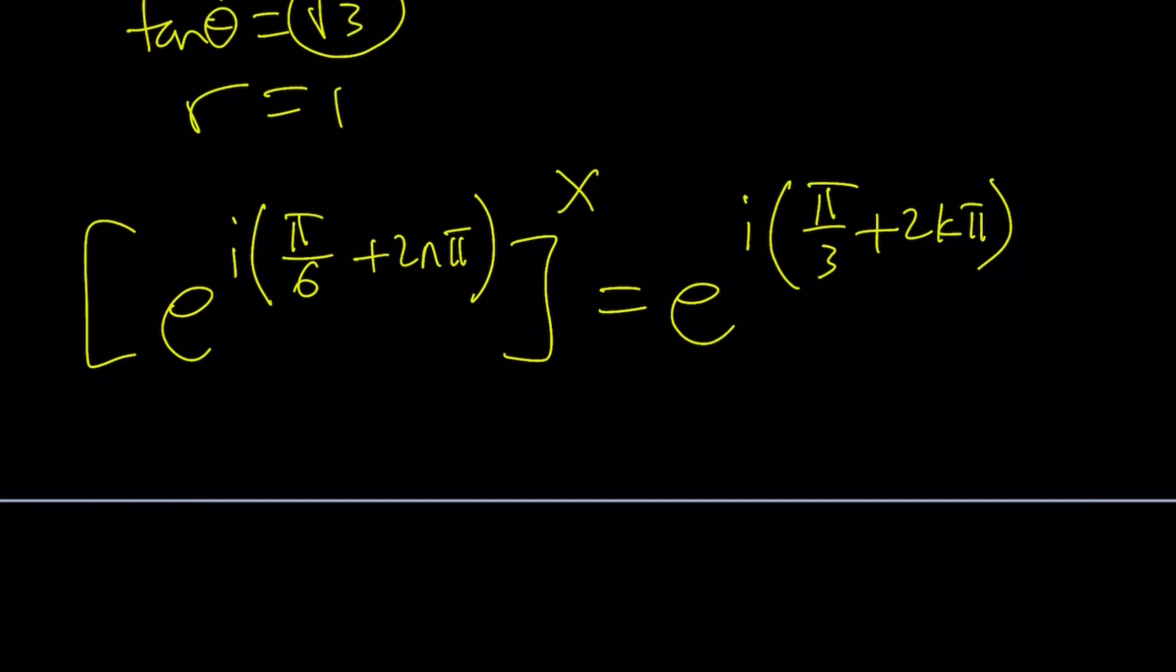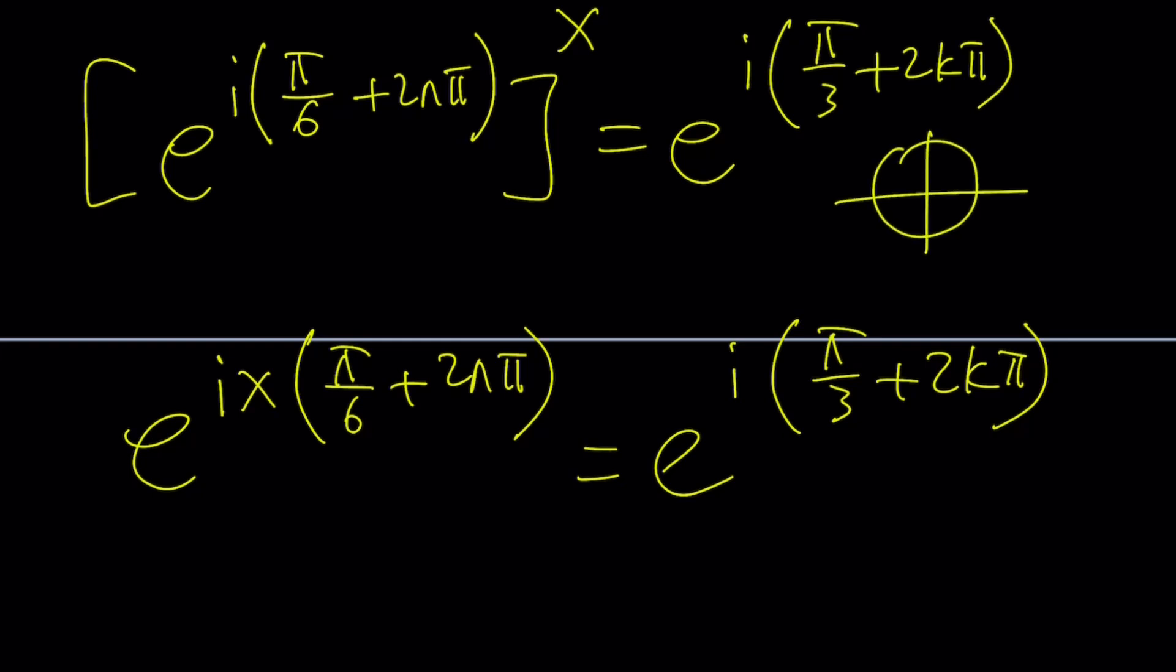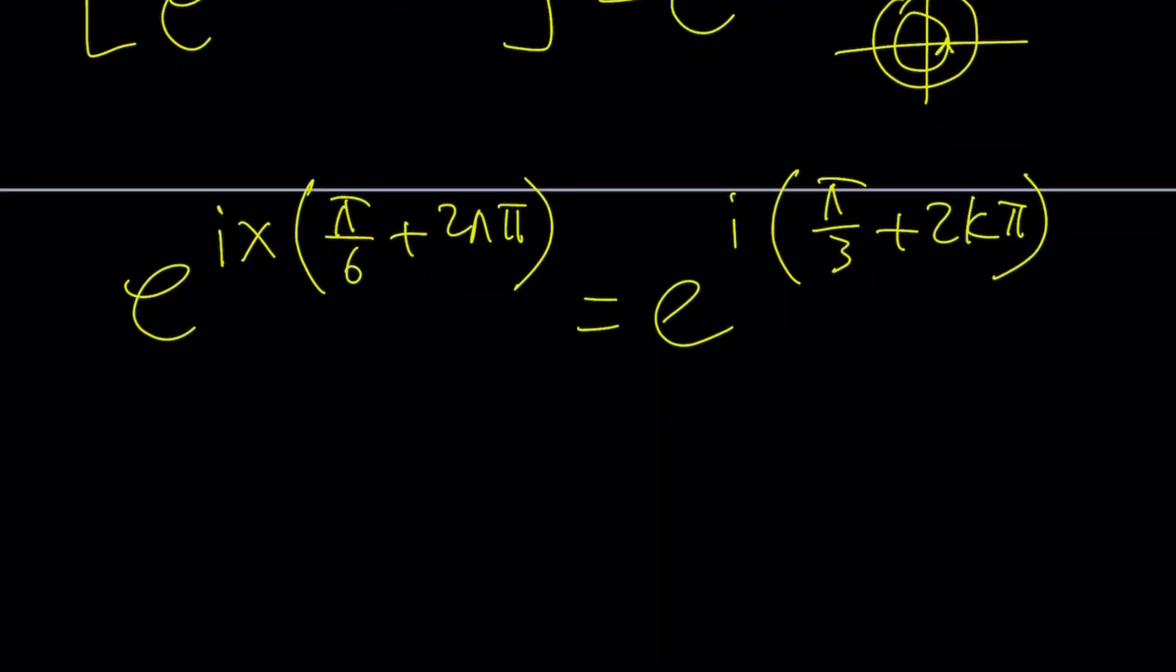What am I going to do next? Just multiply the exponents. You're going to get e^(ix(π/6 + 2nπ)), which is something that I can simplify later. And that equals e^(i(π/3 + 2kπ)). 2k just represents an even number, so we're adding even multiples of π or multiples of 2π. Integer multiples of 2π, because 2π is a full rotation, it's going to bring you to the exact same point. Make sense?